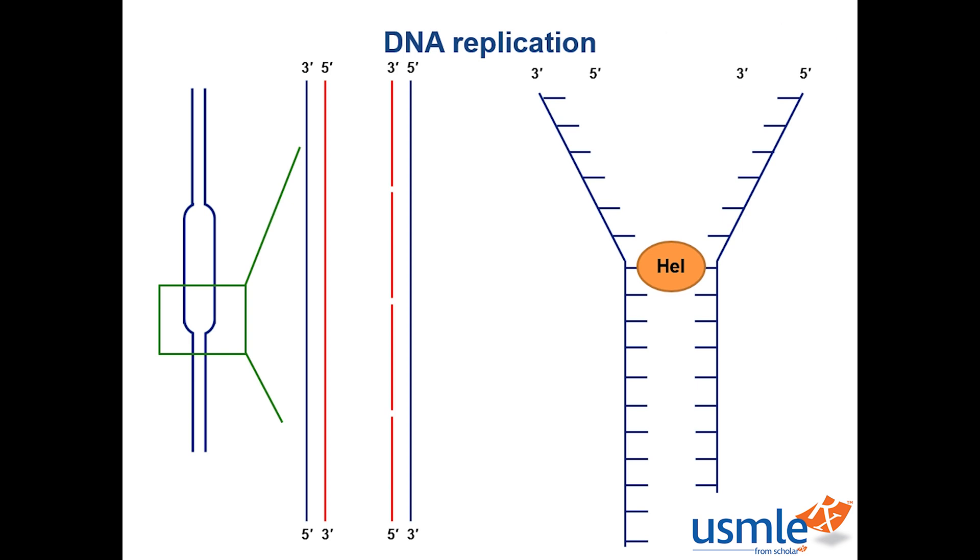Alright, so since helicase is moving along with the replication fork, something is needed to prevent the strands from re-annealing to one another, which complementary strands of DNA like to do. Do you know what protein prevents this? This is where a protein called single-stranded binding protein comes into play, and it does just that. It's a protein that recognizes and binds to single-stranded DNA to prevent it from binding to its complementary sequence on the other strand.